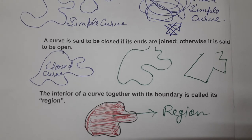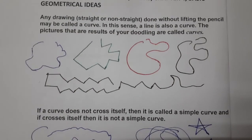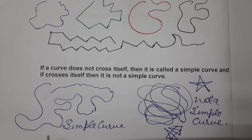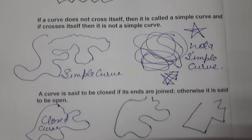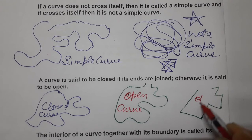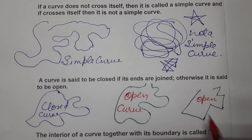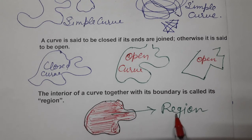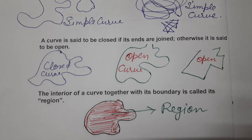So what we have studied today: first, what are curves; then simple curves — a curve that crosses itself is not a simple curve, and one that does not cross itself is a simple curve; then open and closed curves — endpoints not joined means open curve, endpoints joined means closed curve; and lastly, the interior of a curve along with its boundary is called the region. I hope you understood. Thank you so much for watching the video.